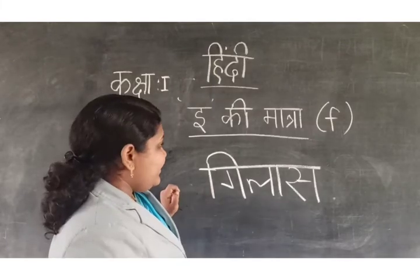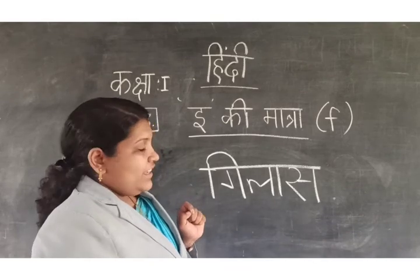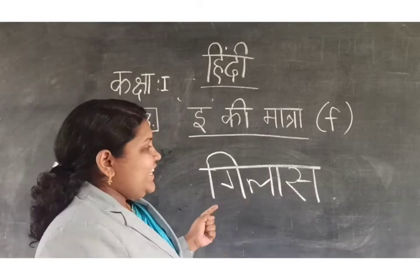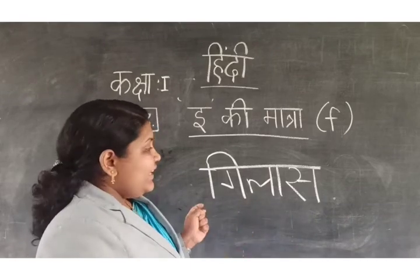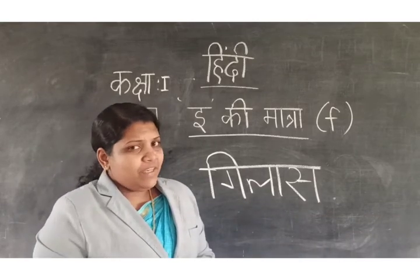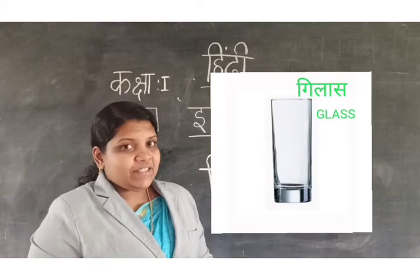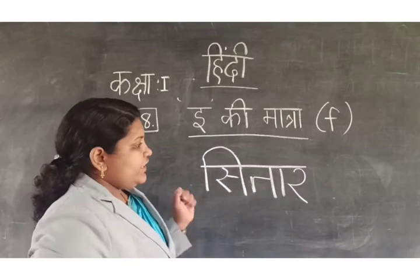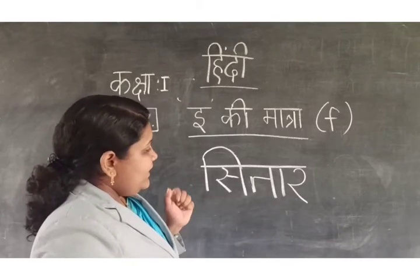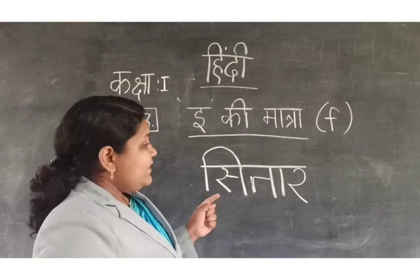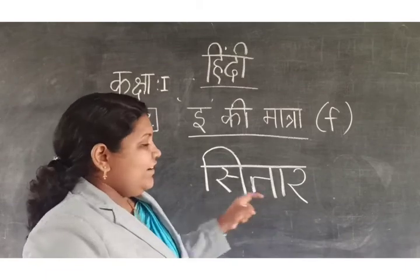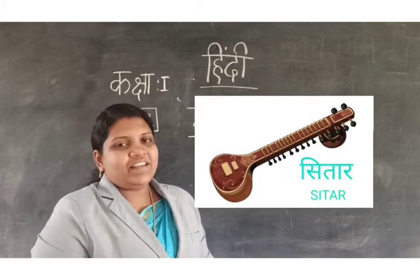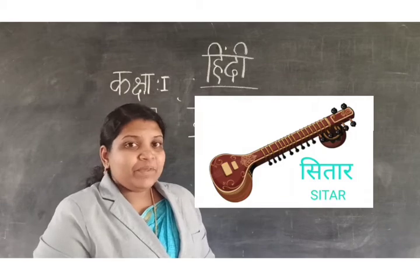Here is the third word. Which way will we write this word? Gilaas. Very good. Say with me: Gilaas. And do you know what is the meaning of Gilaas? Gilaas means glass. Then here is the last word: Sitar. Say with me: Sitar. And do you know what is the meaning of Sitar? Sitar means sitar itself — it is a musical instrument.